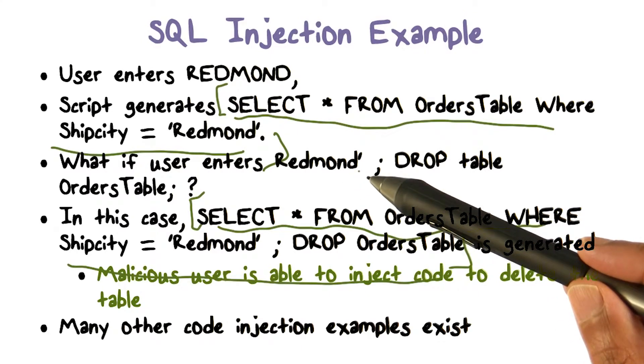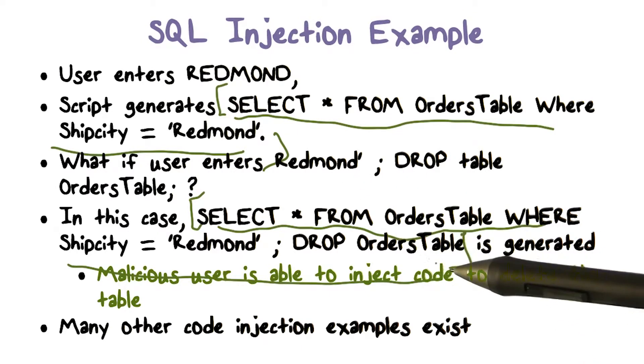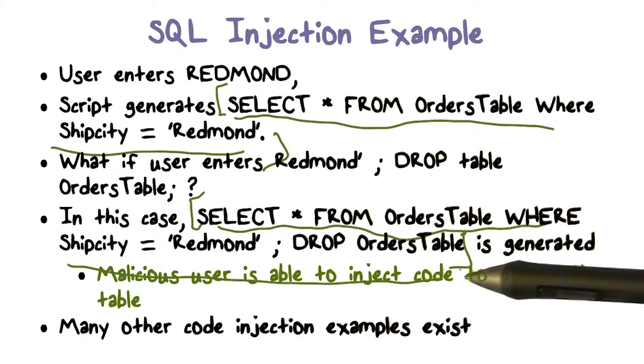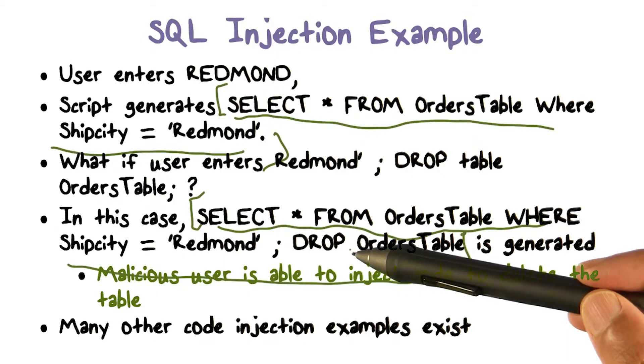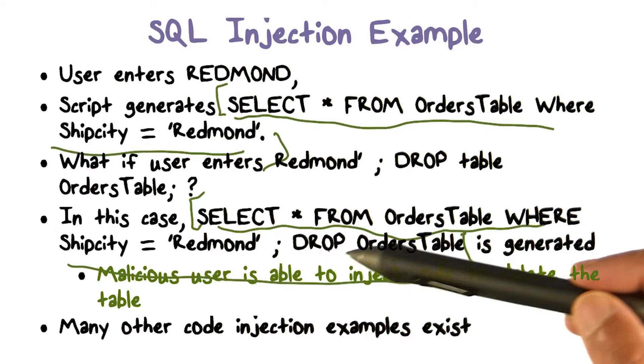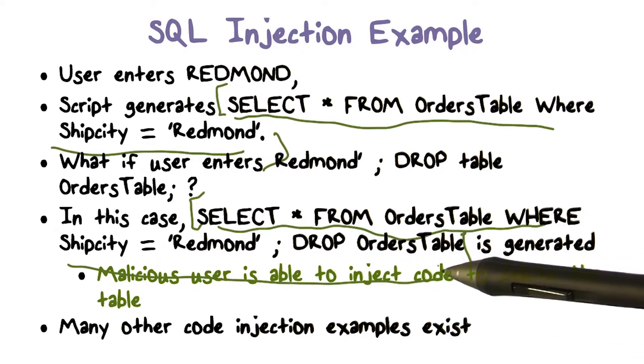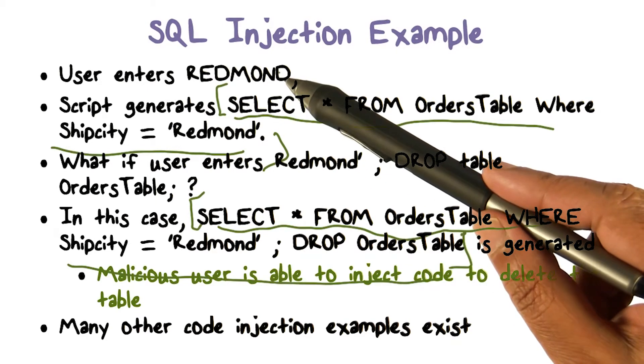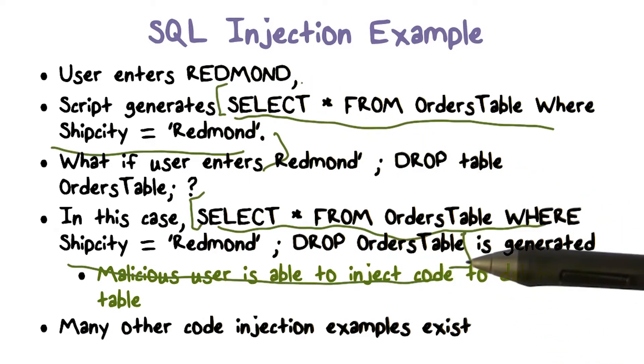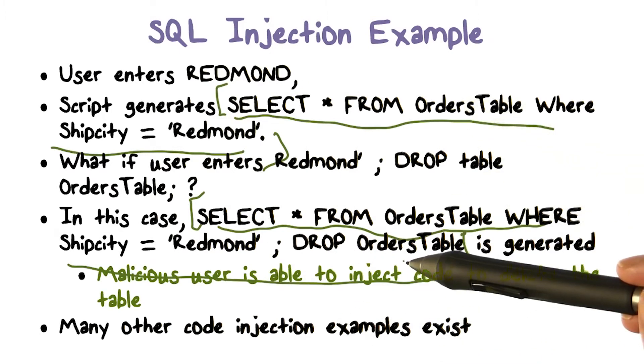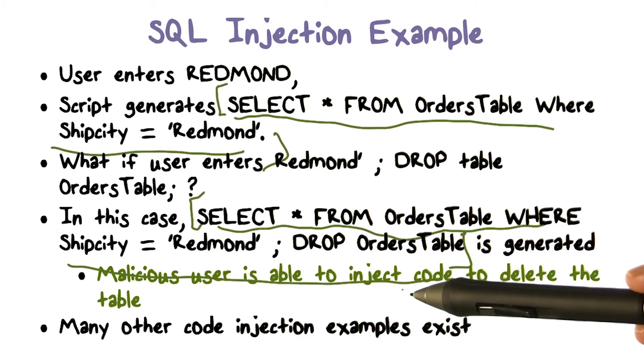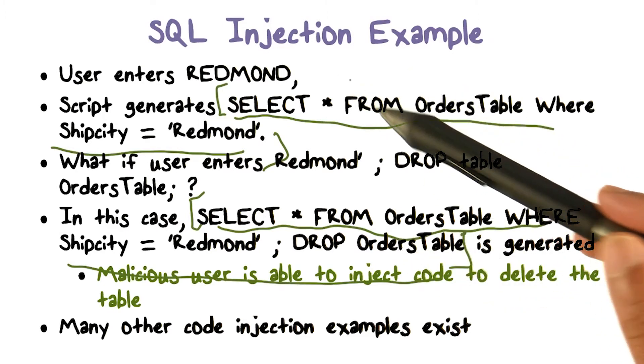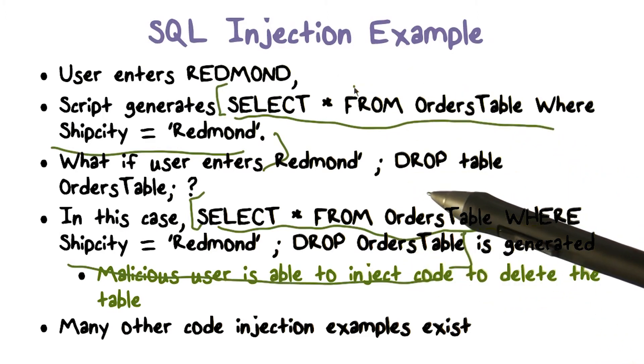We're injecting code through input that is normally expected by the web application. The vulnerability we have in the web application is that it's not checking input, obviously. It is accepting this input for cities where the item is shipped, getting a name of course, but there's a lot more stuff that comes after that. This input is not correct input when we're looking for just a city name. So by providing this input, it's able to inject malicious code to drop the table or to delete the table, which is going to impact its integrity. And that's actually a concrete example of what SQL injections are.